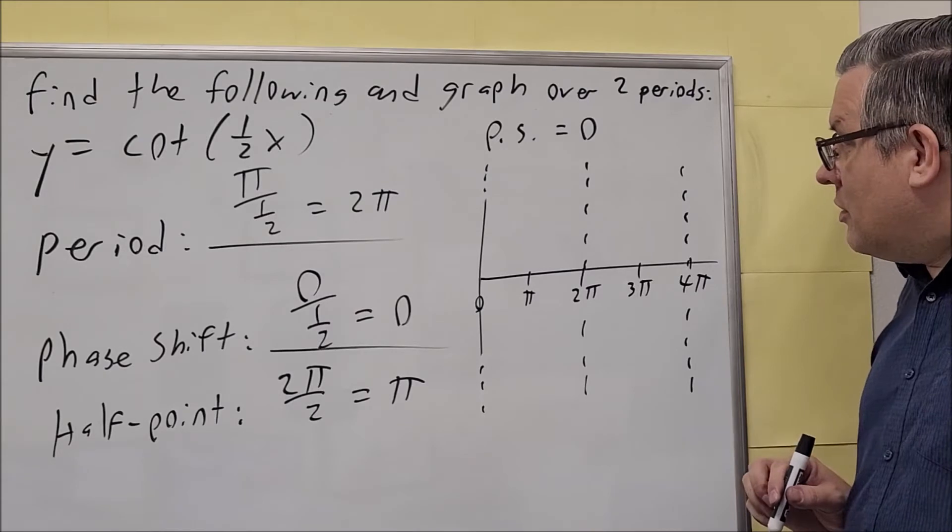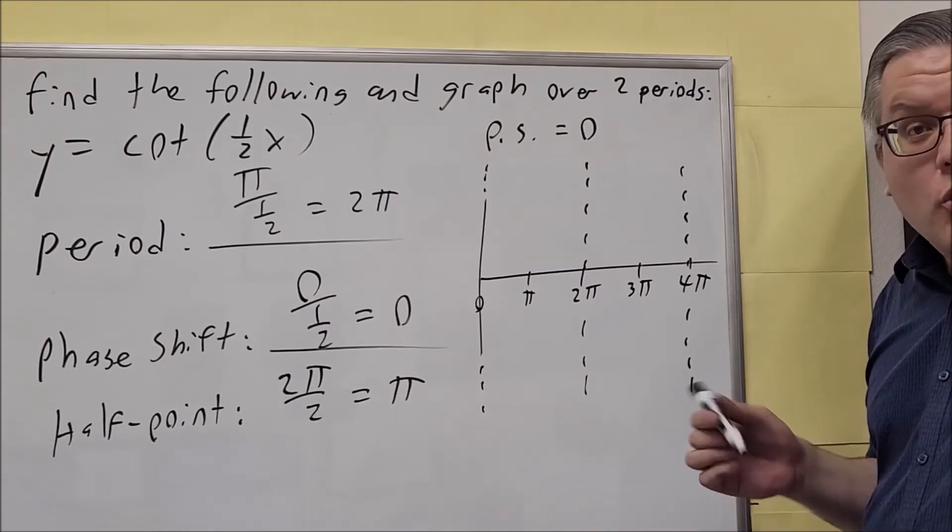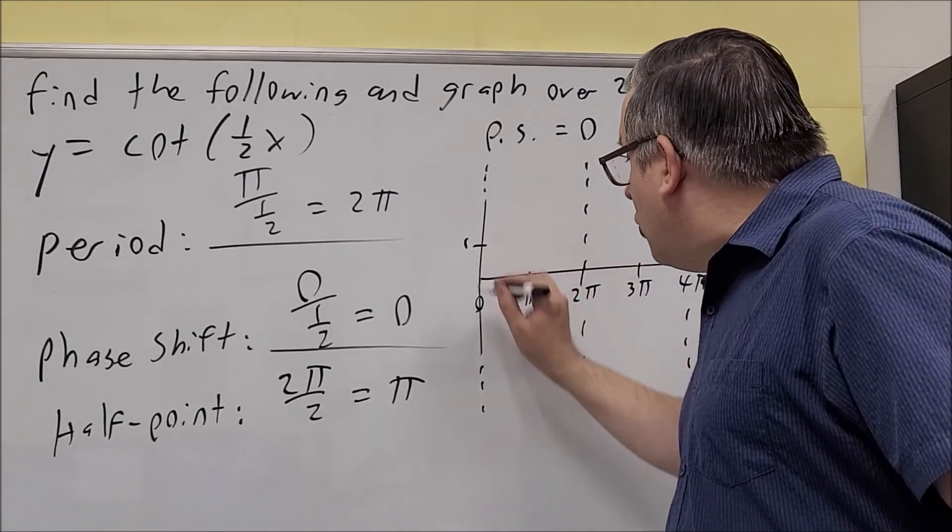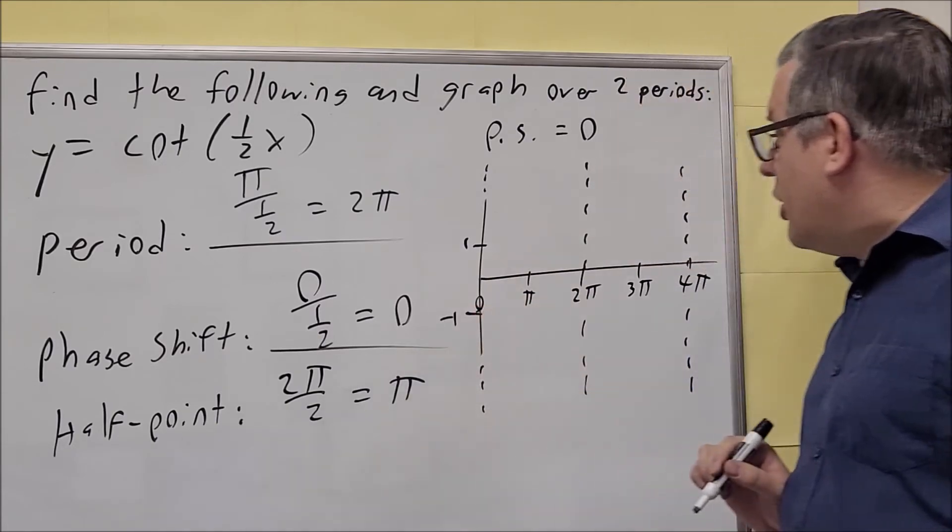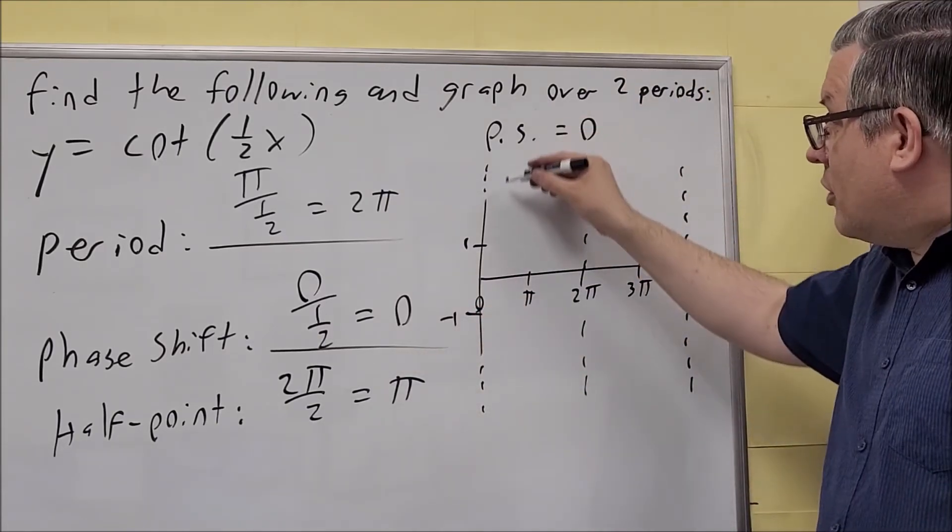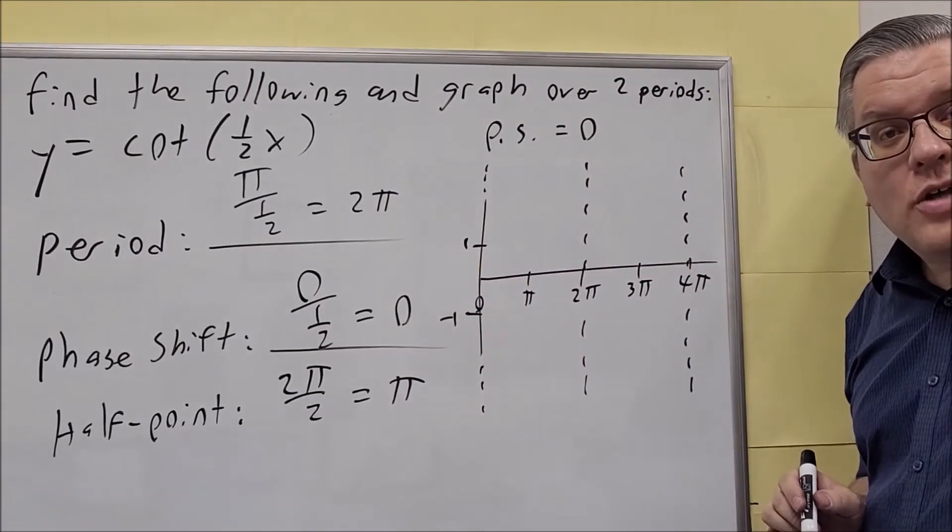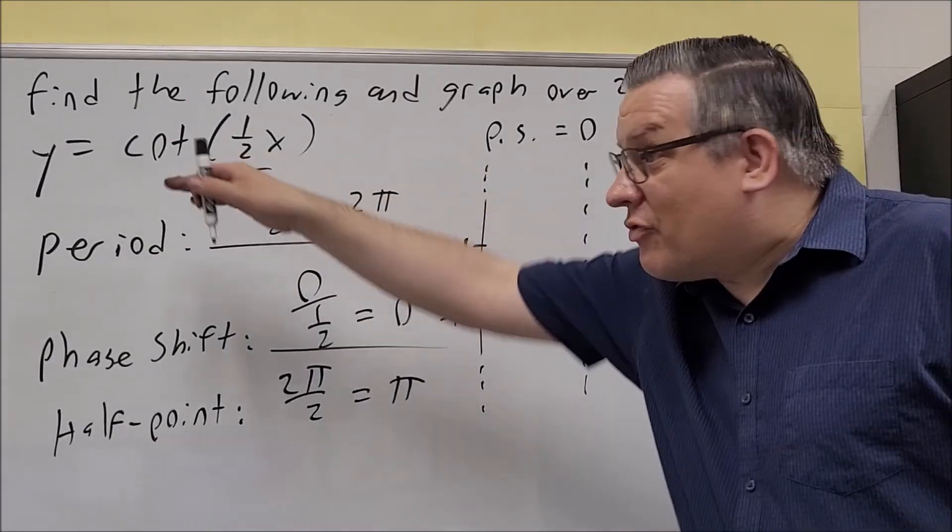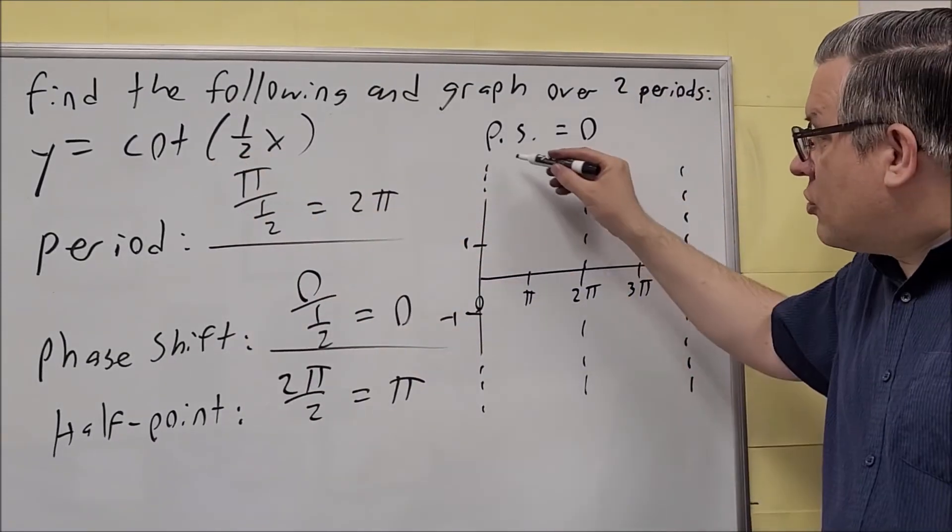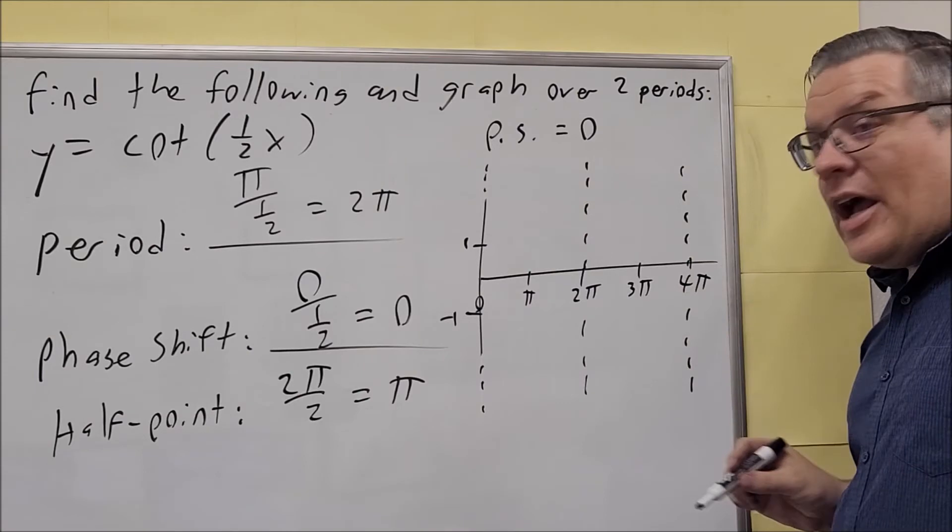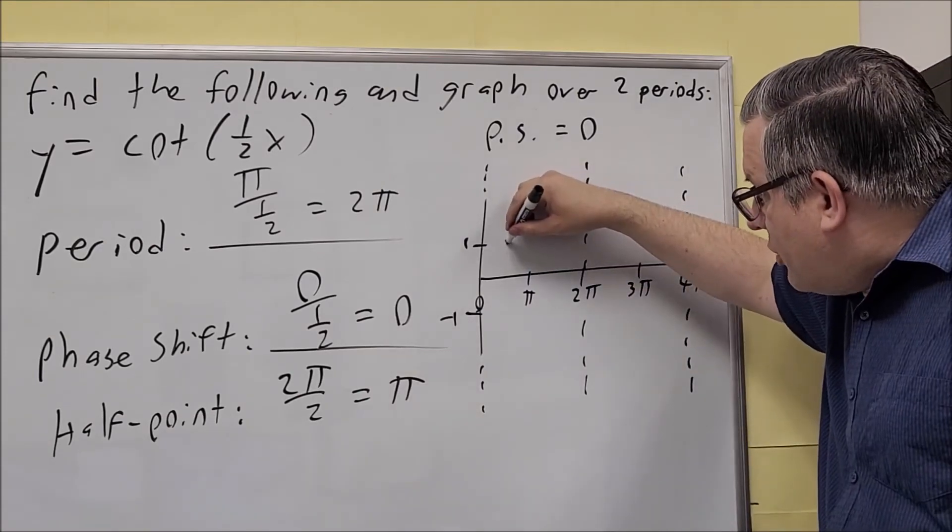In this case, there's not really a vertical shift. We can put 1 and negative 1 here. The graph is going to go in the same direction as the normal base graph does. Because I don't have a negative in front of the cotangent, cotangents normally fall as you go from left to right. So I'm going to put a dot here and then one down there.